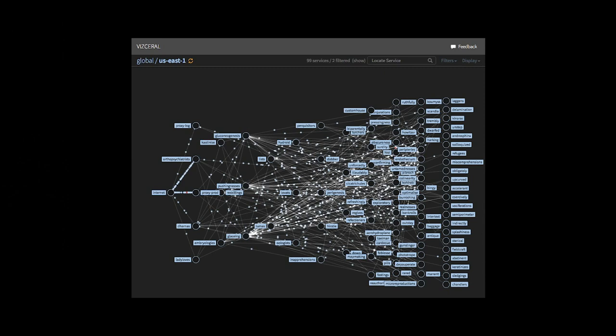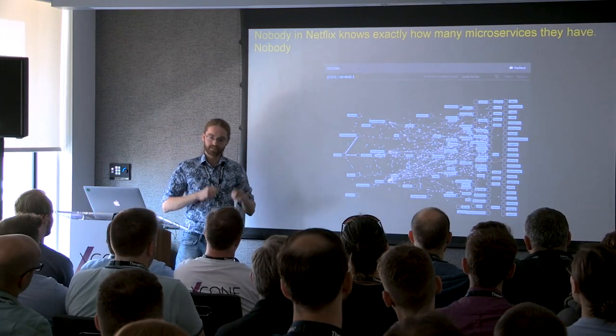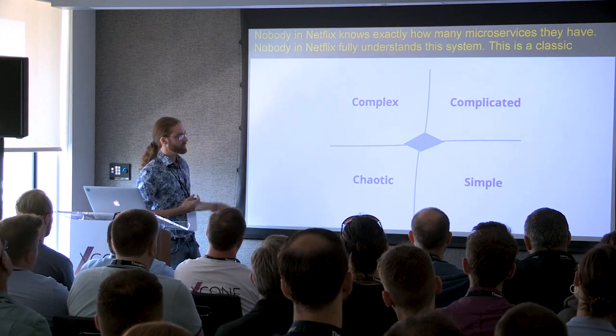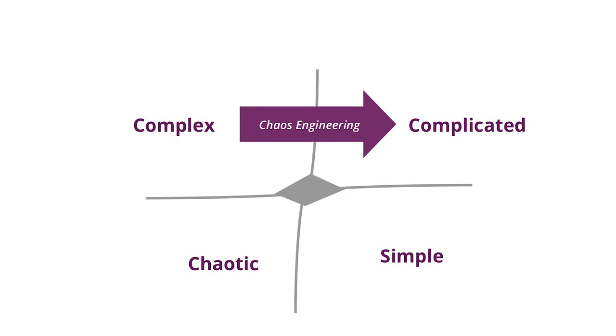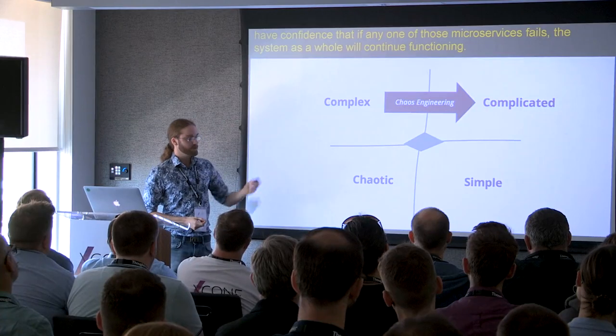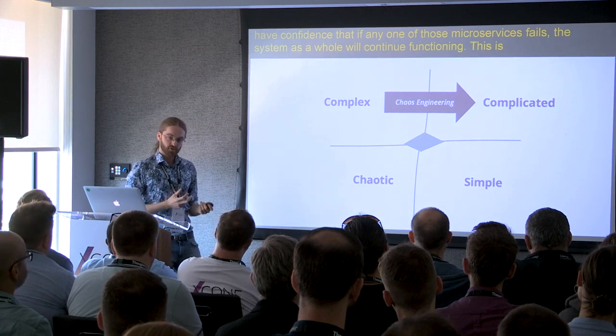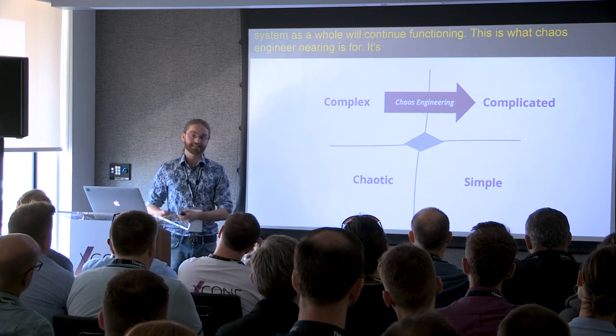If you ever go to a Netflix tech talk, one question that always comes up is: how many microservices do you have? Netflix is famous for microservices, and the answer is always about 500. Nobody in Netflix knows exactly how many microservices they have. Nobody in Netflix fully understands this system. This is a classic characteristic of a complex environment, of a complex scenario. What chaos engineering is doing is allowing them to understand that. Nobody at Netflix understands every single microservice, but they do have confidence that if any one of those microservices fails, the system as a whole is going to continue functioning. This is what chaos engineering is for—bringing understanding to a system that fundamentally is not understandable.